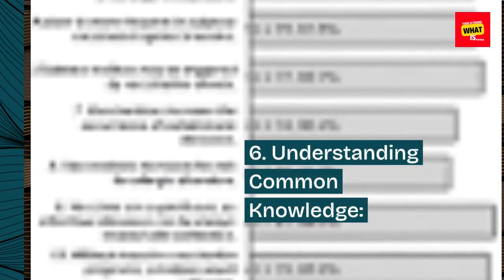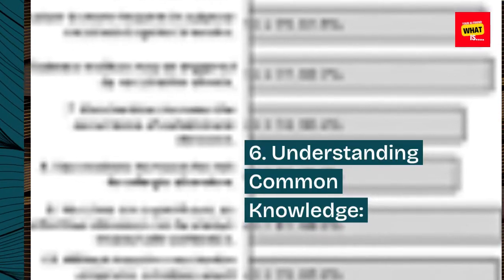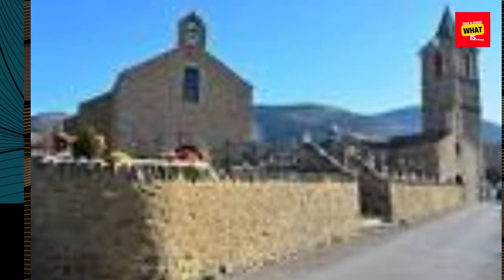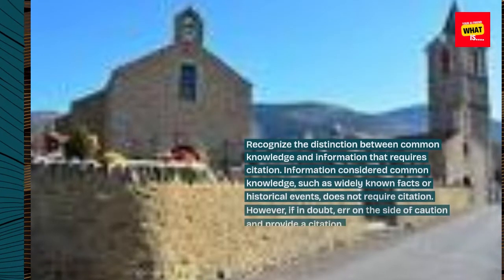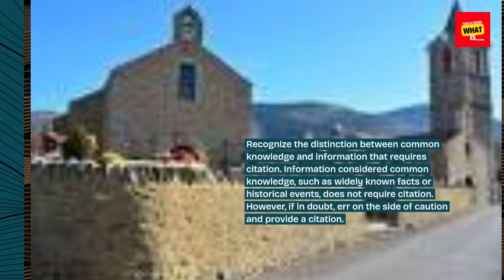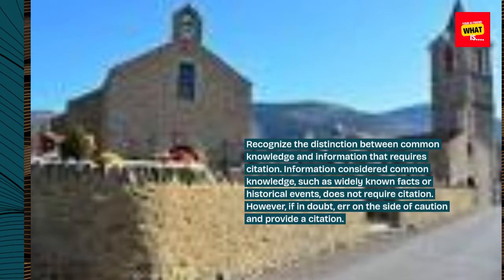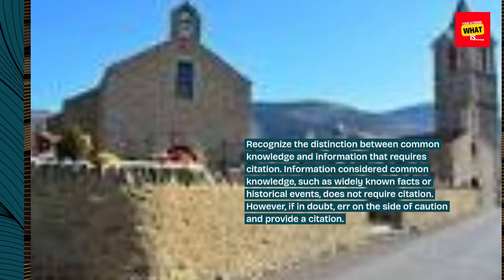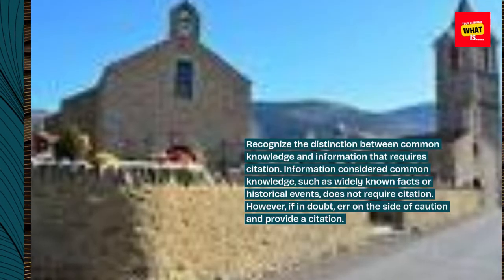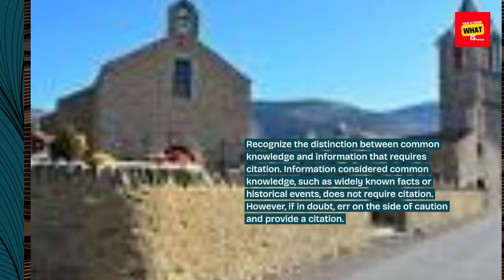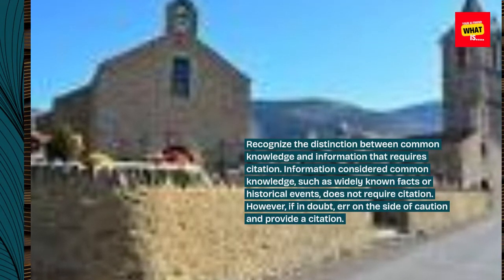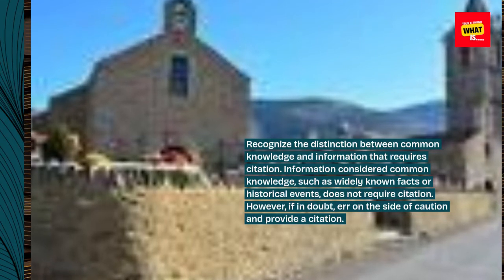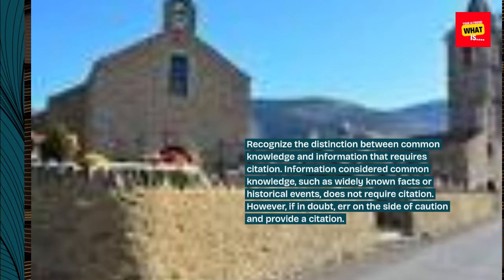6. Understanding Common Knowledge. Recognize the distinction between common knowledge and information that requires citation. Information considered common knowledge, such as widely known facts or historical events, does not require citation. However, if in doubt, err on the side of caution and provide a citation.